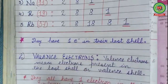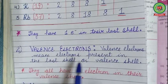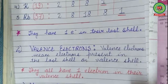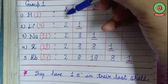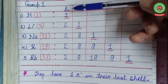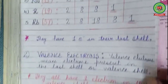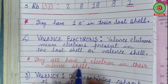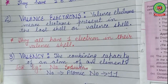The second similarity is valence electrons — the electrons present in the last shell or valence shell. Looking at the chart, all elements including hydrogen have one valence electron in their last shell. Therefore, this property is also similar between alkali metals and hydrogen.